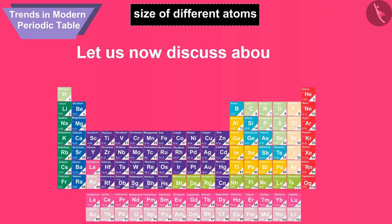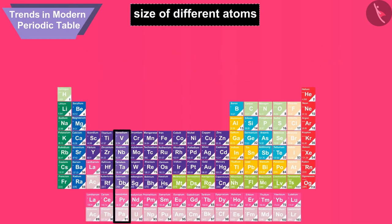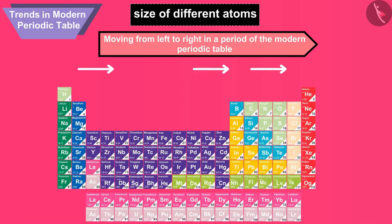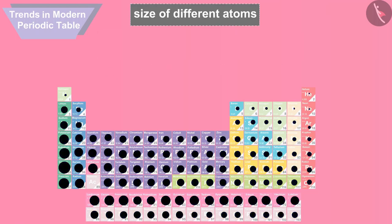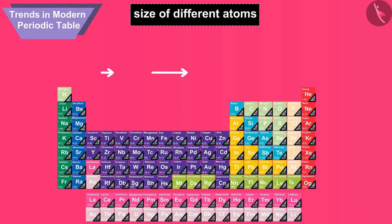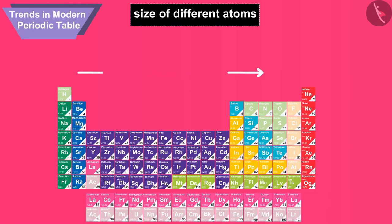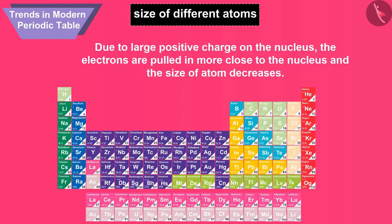Let us now discuss the size of different atoms in a period. On moving from left to right in a period of the modern periodic table, the size of atoms decreases. As we move from left to right in a period, the atomic number of the elements increases, which means the number of protons and electrons in the atoms increases. Due to the large positive charge on the nucleus, the electrons are pulled in more closely to the nucleus and the size of atoms decreases.